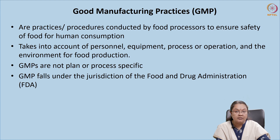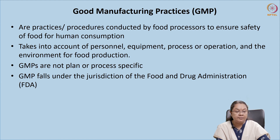When we talk about safety, it should be from the perspective of personnel — the human resources working in the industry — and also from the perspective of equipment, processes, operations, and the environment in which production is done. All aspects, whether directly or indirectly involved in food production, have to be taken into account. GMPs are not plan or process specific; it is an underlying standard adopted by the entire industry and does not change from process to process. It is mandatory that all companies adopt this stringently.